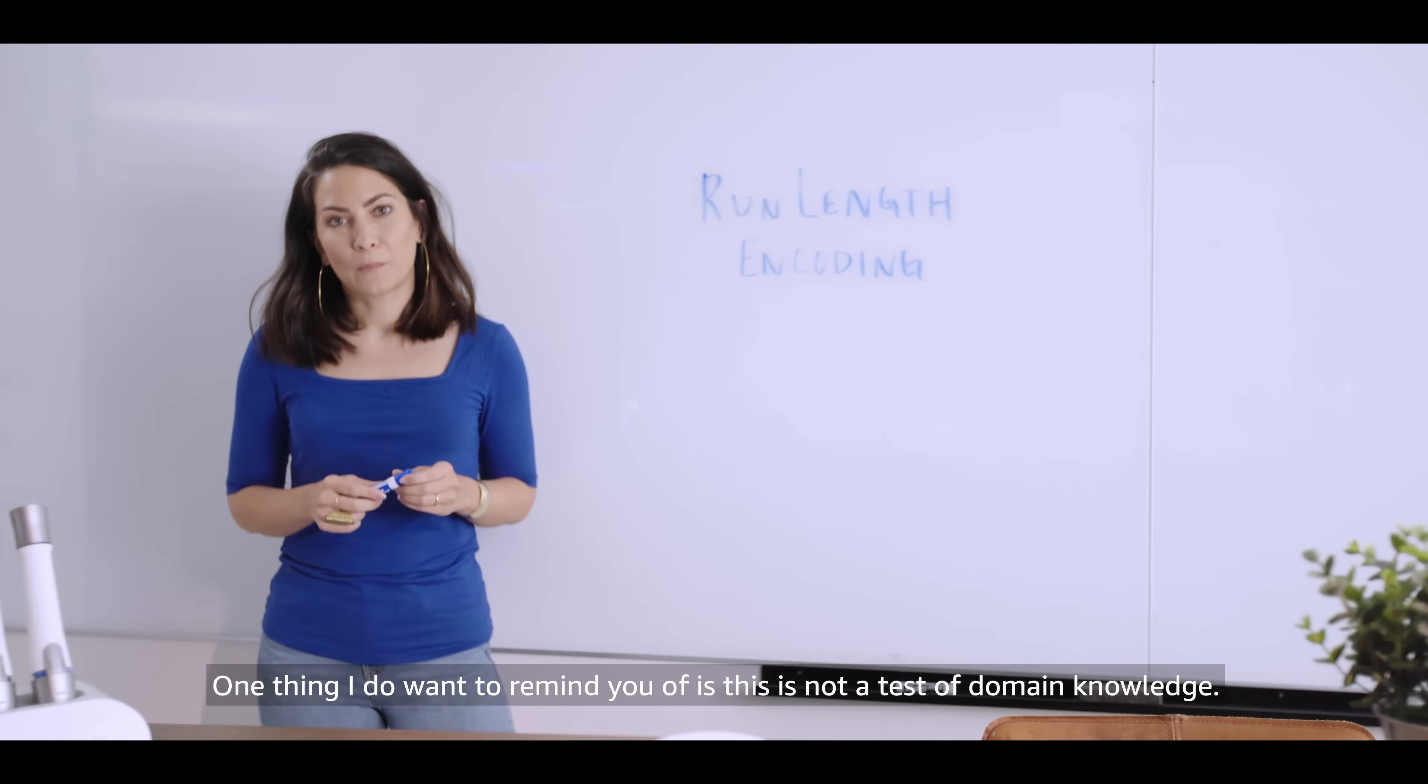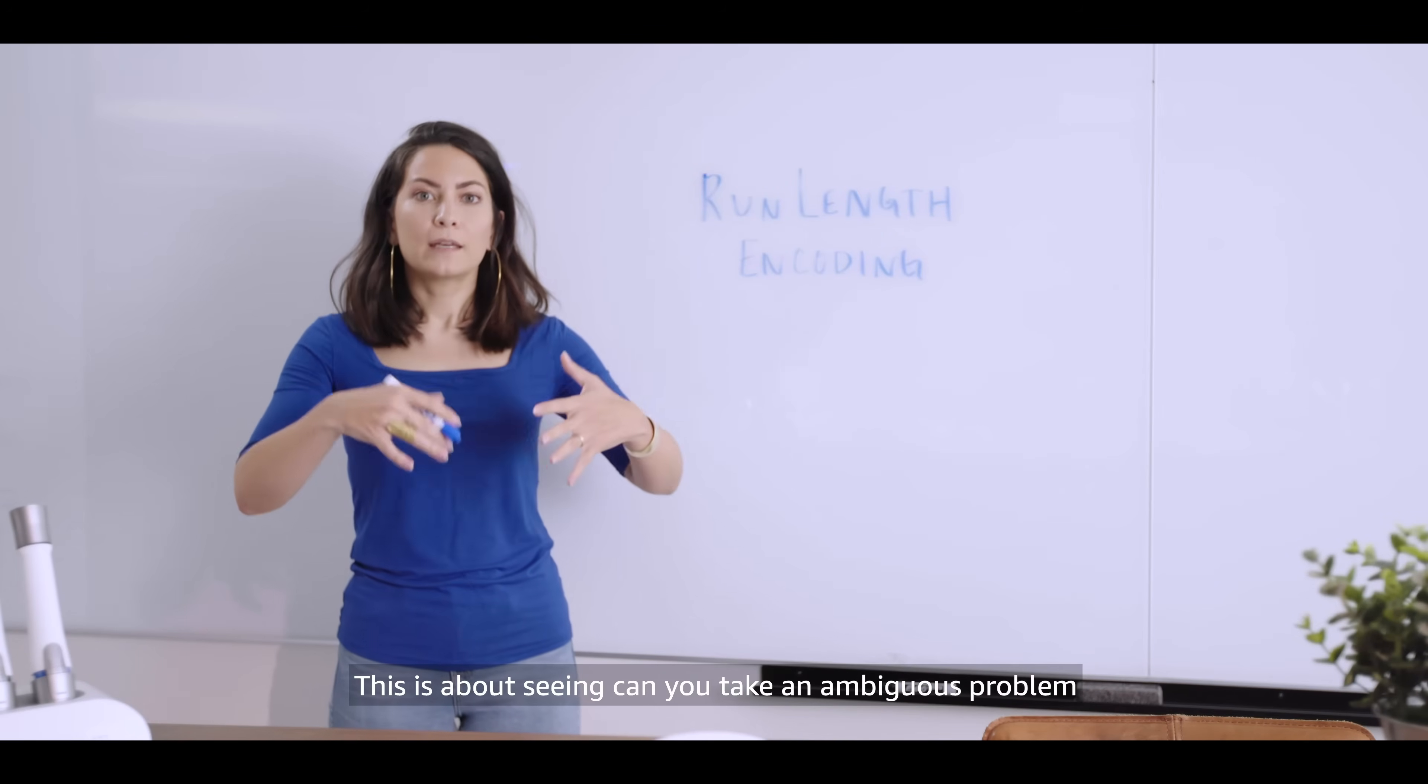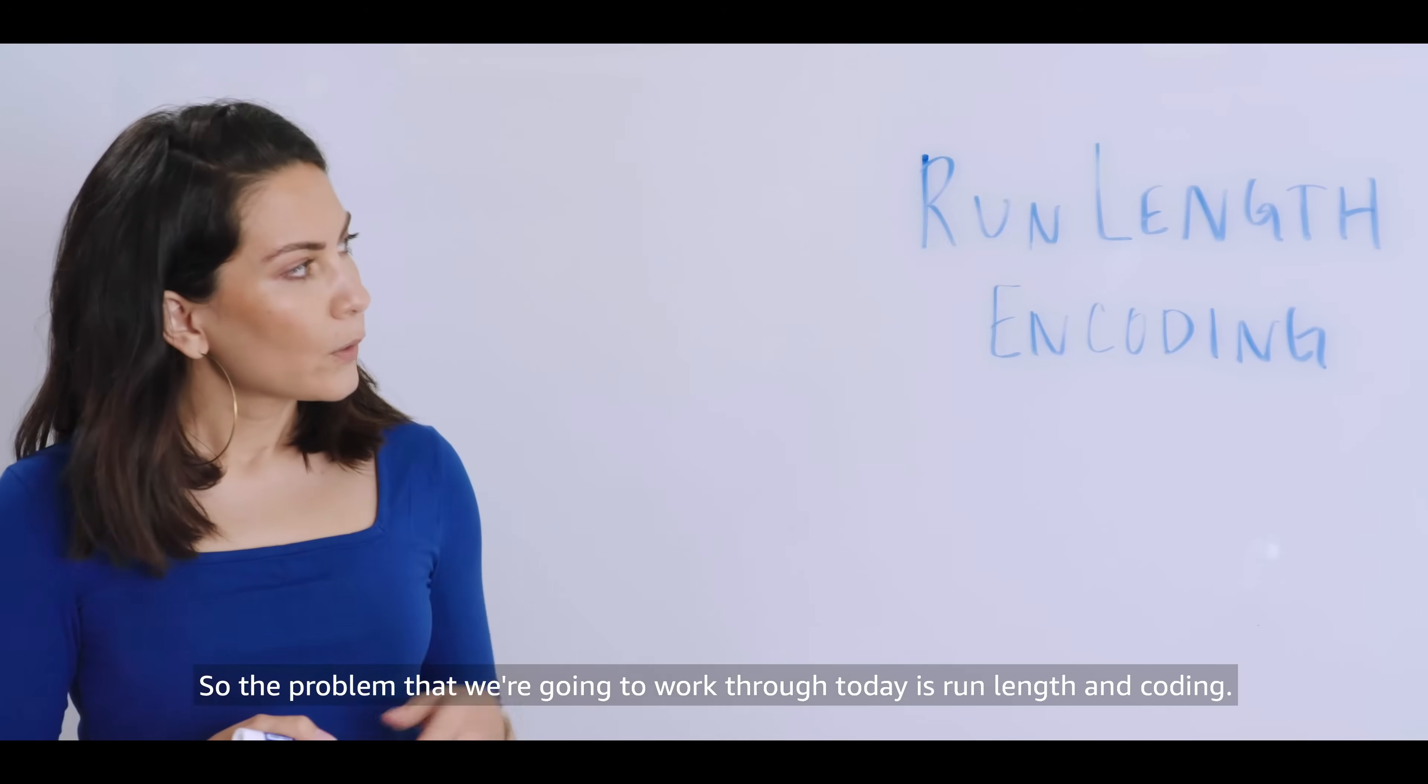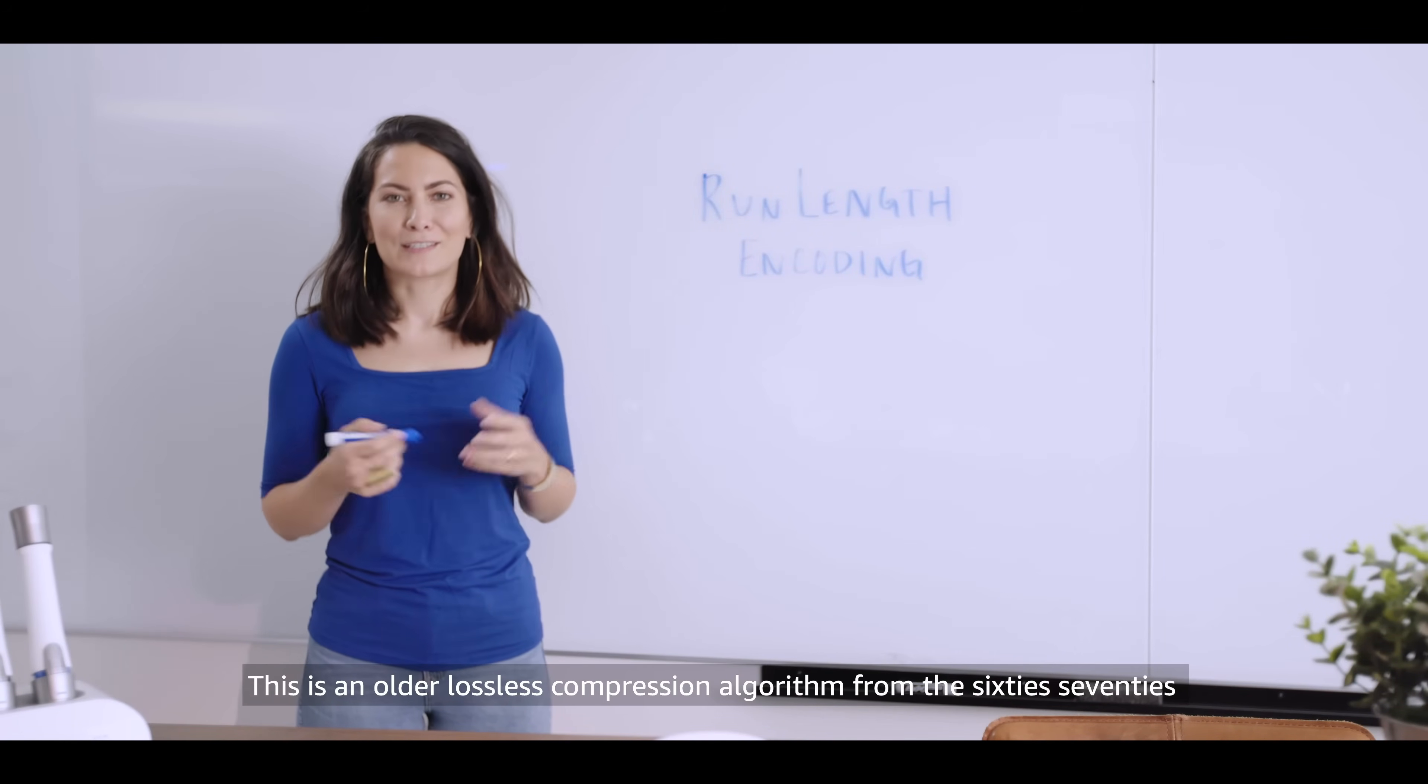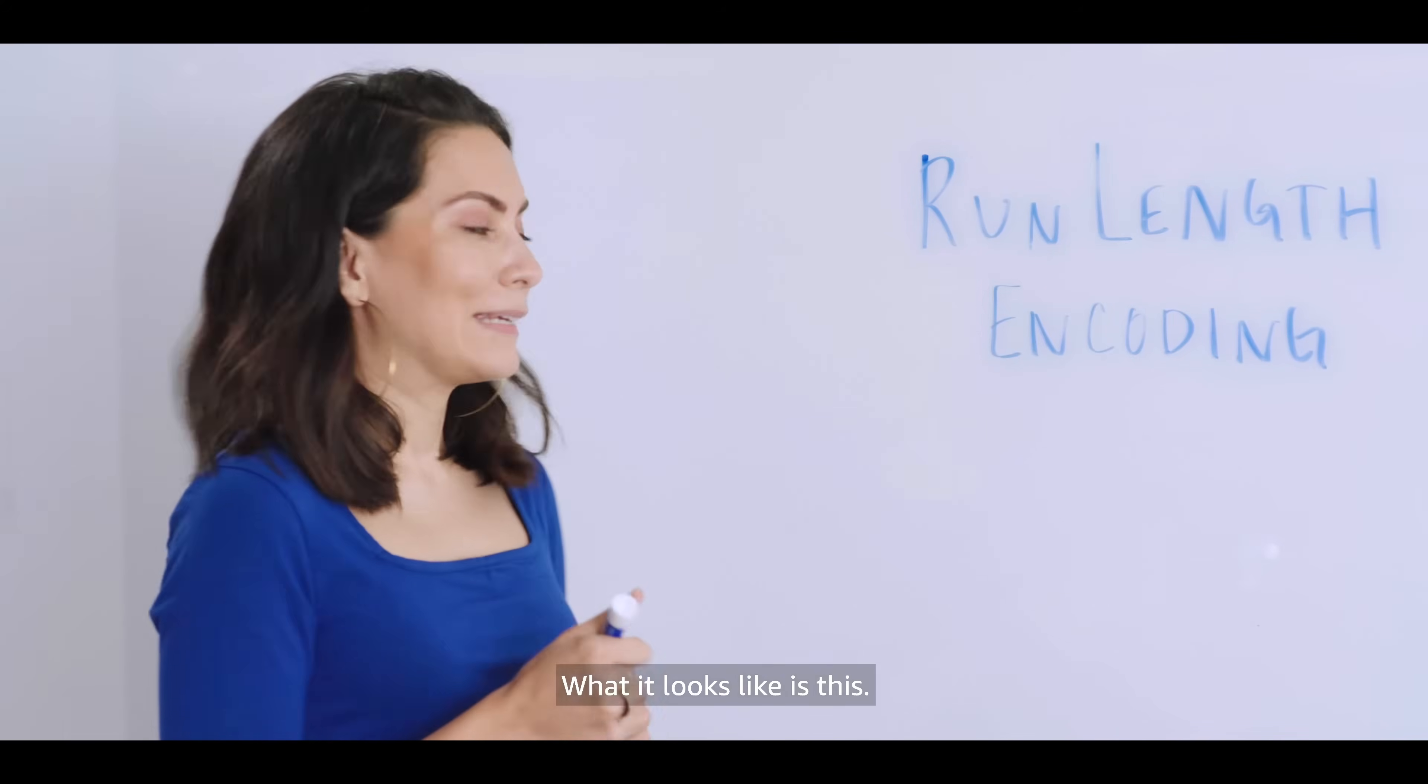One thing I do want to remind you of is this is not a test of domain knowledge. If an interviewer asks you a question about rugby we don't expect you to know the rules of rugby. This is about seeing can you take an ambiguous problem, try and disambiguate the edges and then come up with a reasonable working solution. So the problem that we're going to work through today is run length encoding. Now it's fine if you've never heard of this, this is an older lossless compression algorithm from the 60s, 70s and it was a way to compress image files. If you think of an image file as just a series of pixels that you can then compress or run if you will.